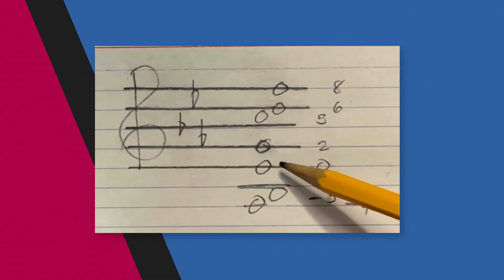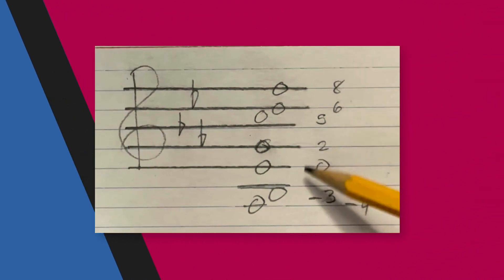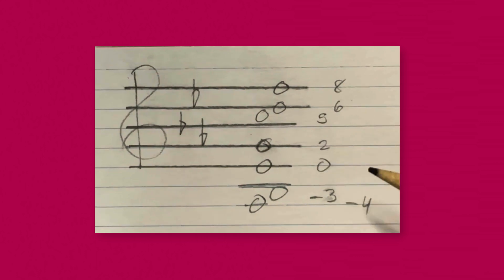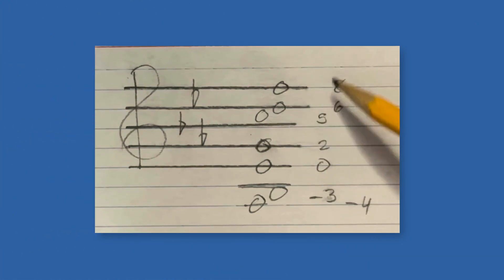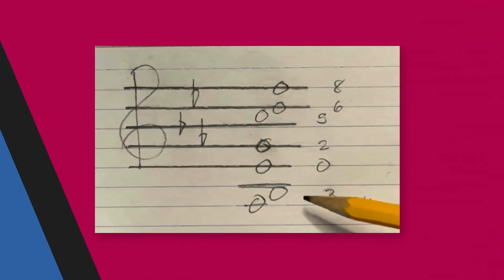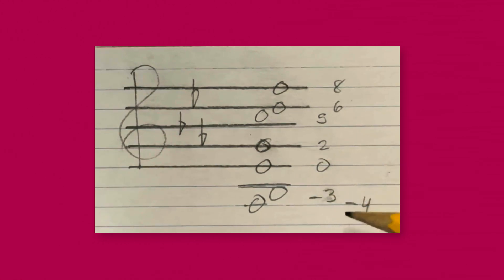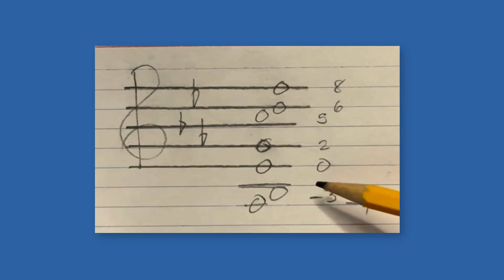I'm going to label each of the notes in the chord with a number that describes how far away they are from the tonic pitch E-flat. So E-flat is zero scale steps from itself. G is two scale steps from E-flat. C is five scale steps from E-flat. D is six. F is eight. And then down below, B-flat is minus three scale steps from E-flat. And A-flat is negative four scale steps from E-flat. So I've got all the notes in the chord labeled with numbers that describe how many scale steps they are from the tonic pitch.